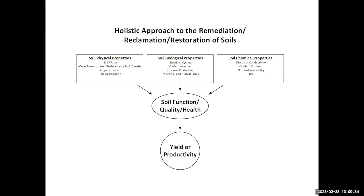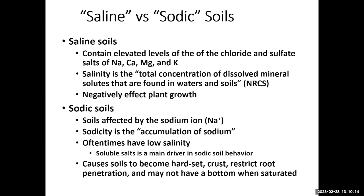Now we're going to move to the soil chemical properties: electrical conductivity and sodium content. These are the two things on the back of your sheet. What's the difference between saline soils and sodic soils? Saline soils — I've heard them called sick soils, alkali soils, sour soils — the terminology varies, but it helps to use common terms.